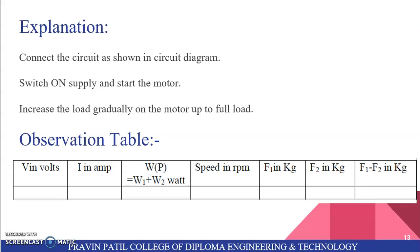Observation for this test is V in volt, I in ampere, total wattmeter reading is given by the addition of the two wattmeter readings, that is W1 plus W2 watt. Next, you can calculate speed in RPM, F1 in kg and F2 in kg, that is two weights, and F1 minus F2 in kg. So F1 and F2 are the weights.